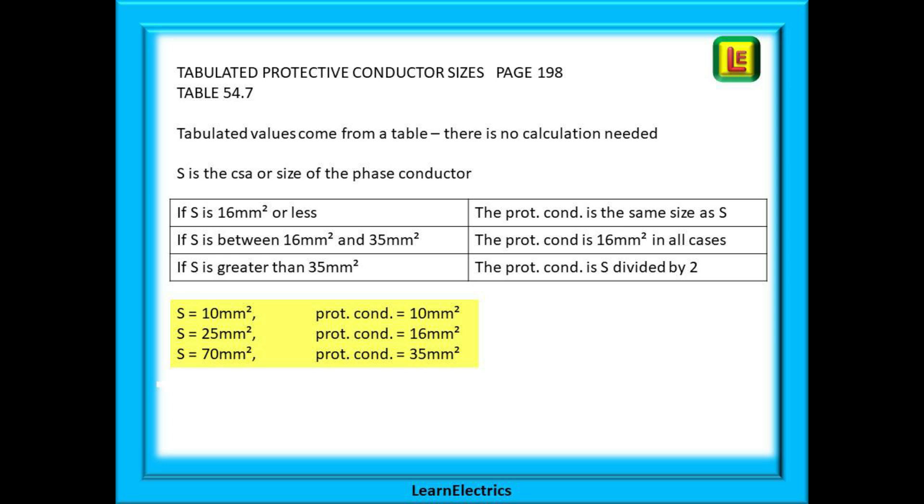Another important section related to protective conductor sizes is on page 198 and this gives the tabulated sizes not calculated. It is less accurate than a calculation but will always give a size that is at least big enough. Read through the slide and relate this to the table in your book.